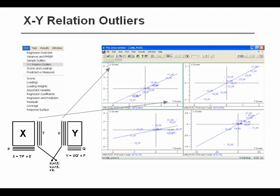So the sample is normal when you look at it from an X perspective, and the sample is normal when you look at it from a Y perspective, but there is something wrong in the relation between X and Y. That will show up very clearly as an outlier in one of these plots.